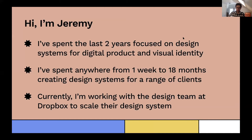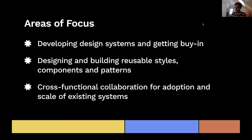In that time, I've done anything from really small one-week turnaround projects to much bigger 18-month projects to create design systems for a range of clients — from food service to brick and mortar businesses, tech companies, everything in between. Currently I'm working with the design team at Dropbox to scale their design system. My areas of focus today in part one of this two-part series are developing design systems and getting buy-in, designing reusable styles, components, and patterns for digital products, and cross-functional collaboration for adoption and scale.